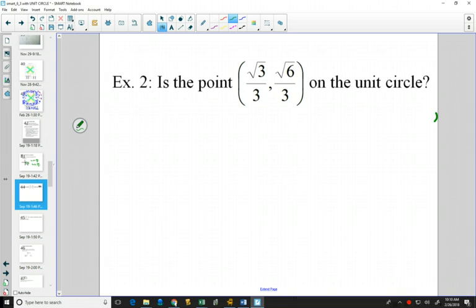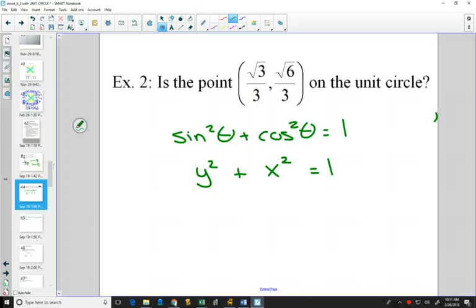Well, if something is on the unit circle, then sine squared plus cos squared equals 1, or your y coordinate squared plus your x coordinate squared is equal to 1.